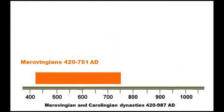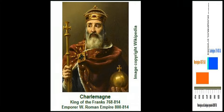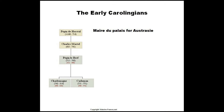Henri Pirenne, in 'Les Villes du Moyen-Age', described so well the enormous differences between the first Frankish Merovingian dynasty and the second dynasty, the Carolingians, named after Carolus Magnus — or as we know him better, Charlemagne. He was part of the Pepin-Martel family, the founders of the second Frankish dynasty. They had been Maires du Palais, a title that described the top noble generals under the final Merovingian kings.